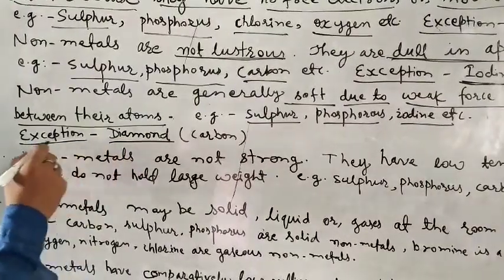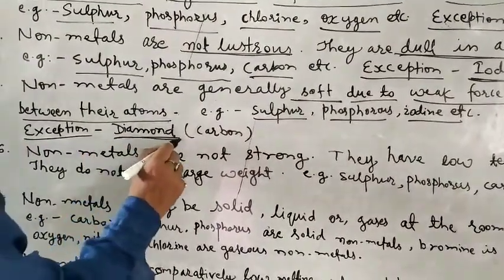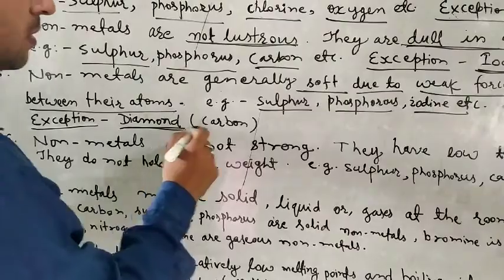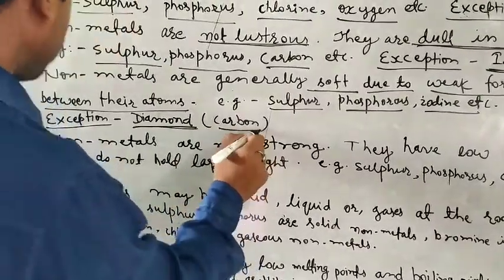The only exception is diamond, which is the hardest substance in the world and is an allotrope of carbon.